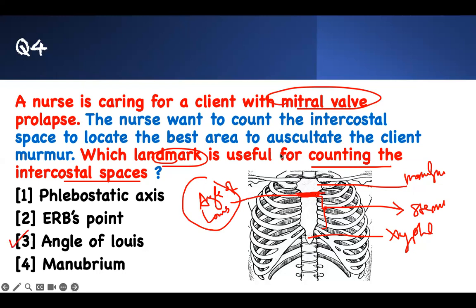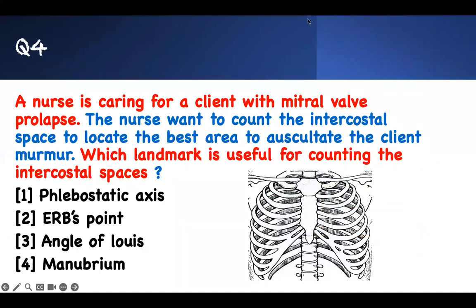So: first intercostal space is bounded by the first and second ribs. The Angle of Louis is the landmark helping you count the intercostal spaces — it is the junction between the manubrium and the sternum. That covers the Angle of Louis, Erb's point, and phlebostatic point — I'll show you all of them.